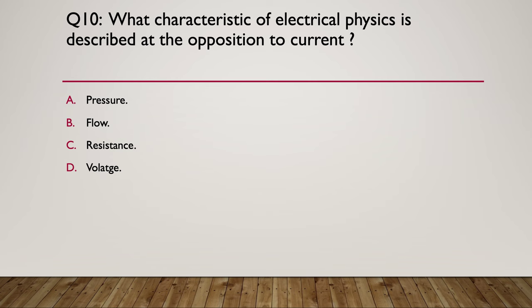Question 10, what characteristic of electrical physics is described as the opposition to current? So first selection is pressure, B is flow, the third one is resistance and the final one is voltage. So what is the characteristic of electrical physics described as an opposition to current? The hint is, list three main characteristics of electricity, think about what they are. Answer here this time, what is the characteristic of electrical physics described as opposition to current? That's resistance. Resistance is the opposition to current.